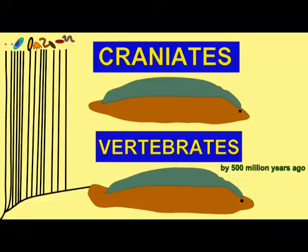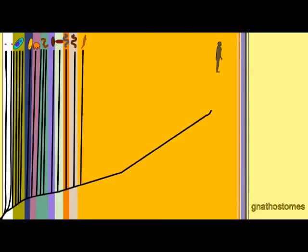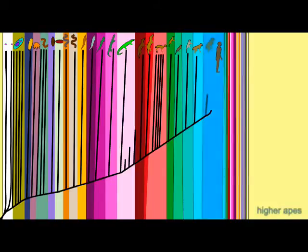For example, do you consider yourself a fish? Since the first vertebrates were fish, they were not only the ancestors of the fish alive today, but the tetrapods alive today. If you do not consider yourself a fish, you are using the group fish as a paraphyletic group, which includes some of the descendants of the first fish, but not all.